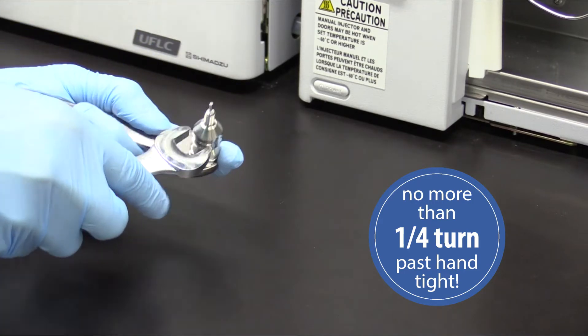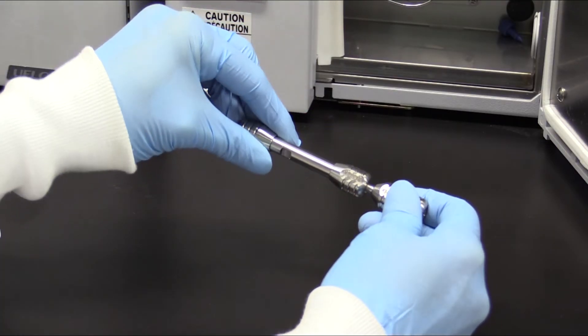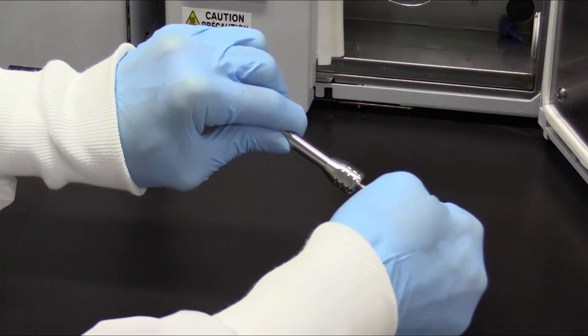Again, when you're installing this completed guard system onto the column, make sure you do hand-tight only, never a tool. We hope this cleared up the Trident guard system for you.